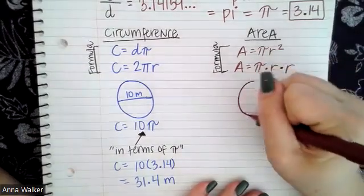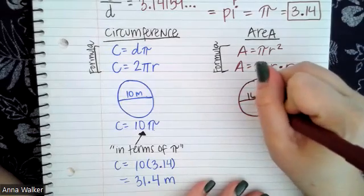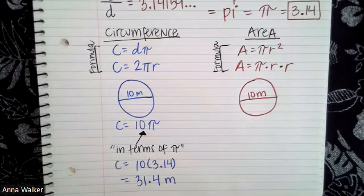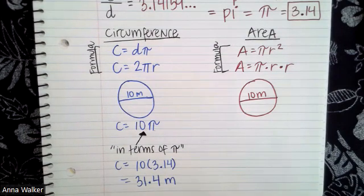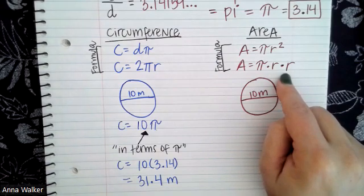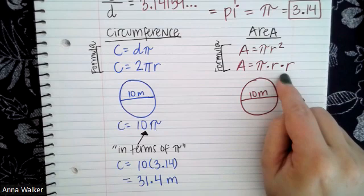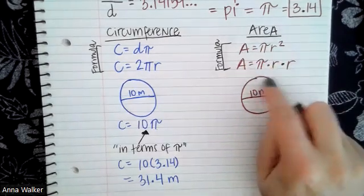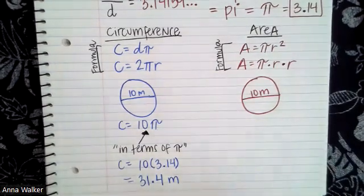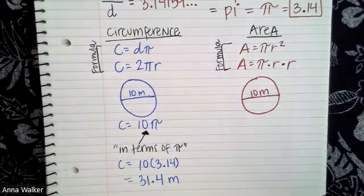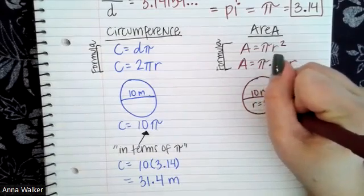Now let's find the area of the same circle with a diameter of 10 meters. To find the area, we do not use the diameter directly. The formula is: area = pi × radius × radius, which is written as pi r squared, because r times r is r squared. Since the diameter is 10 meters, the radius is half of that: r = 5 meters.